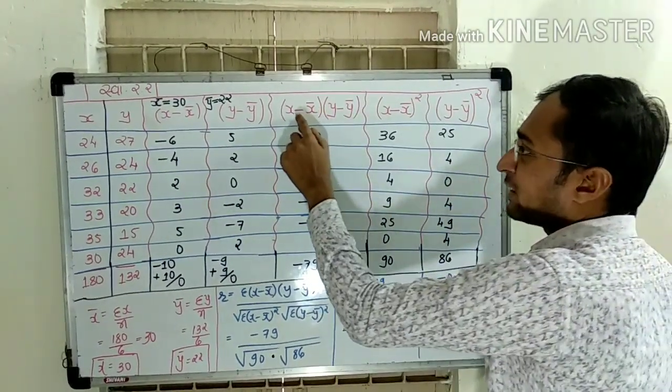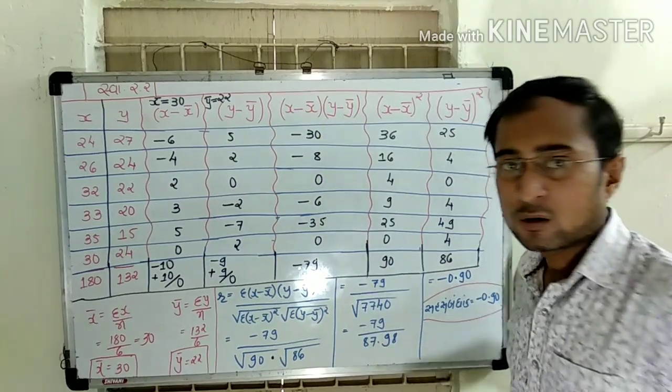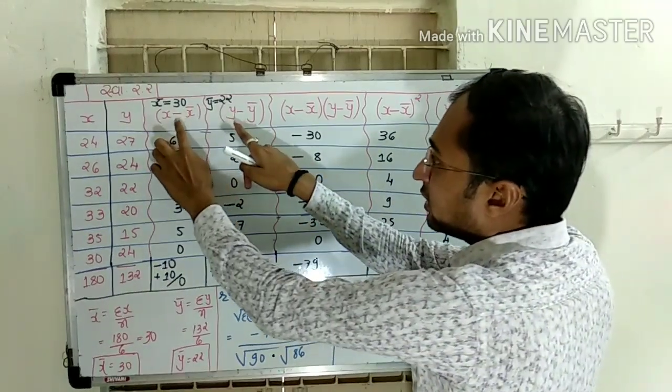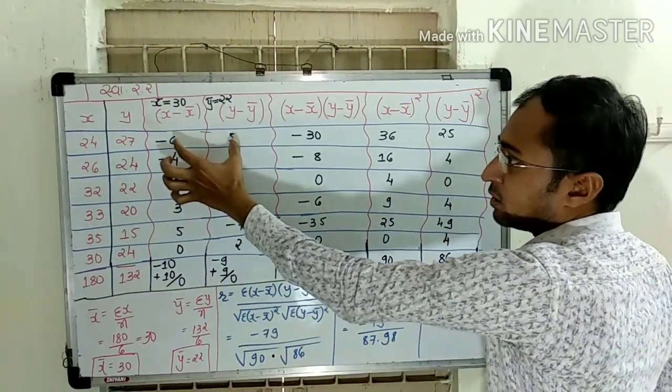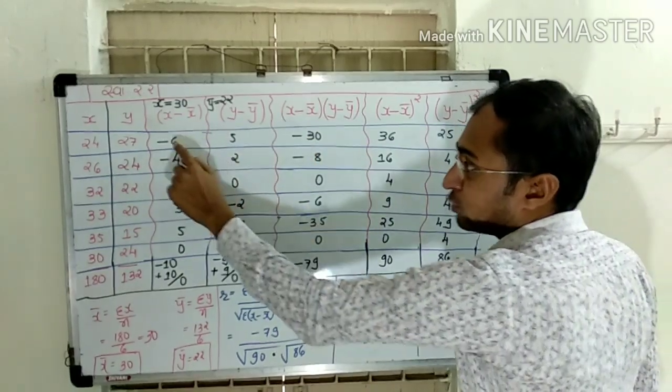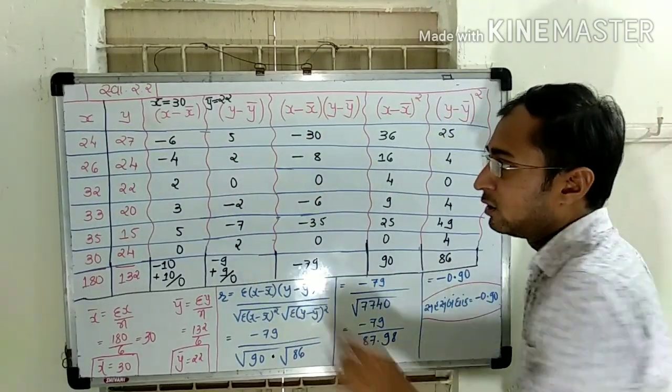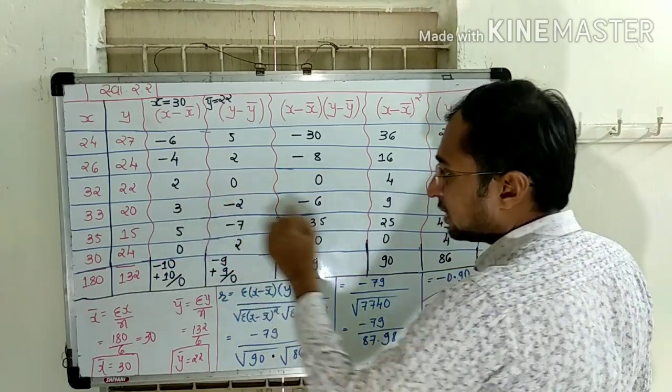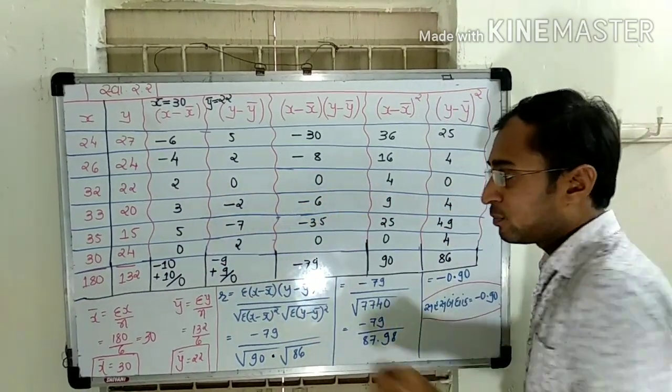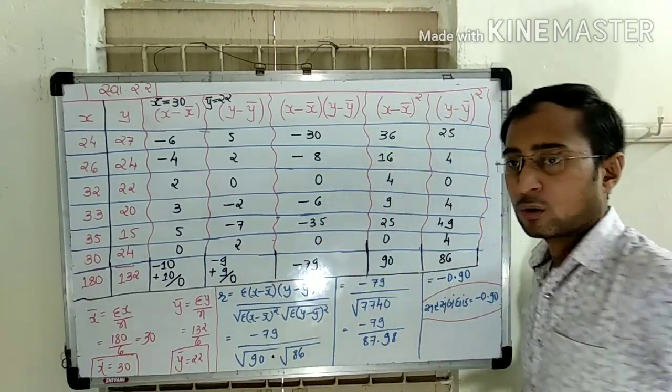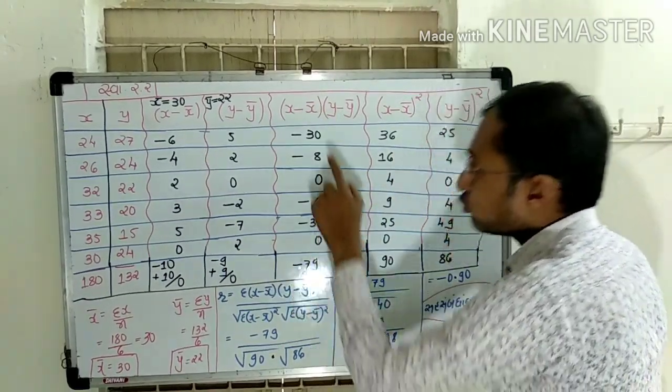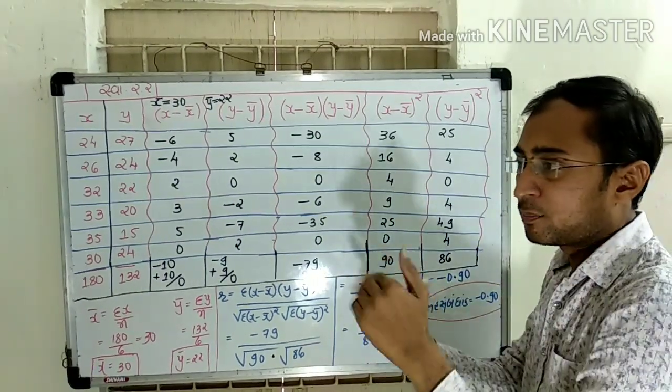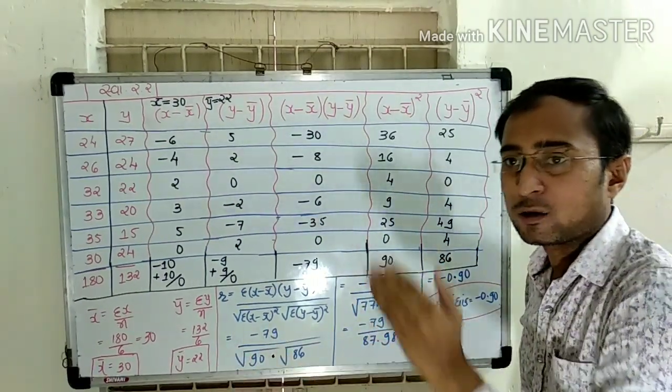This is x minus x bar times y minus y bar.